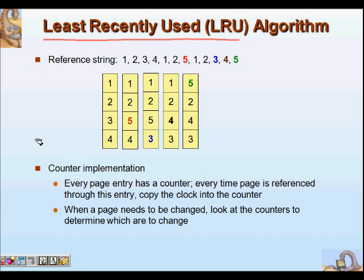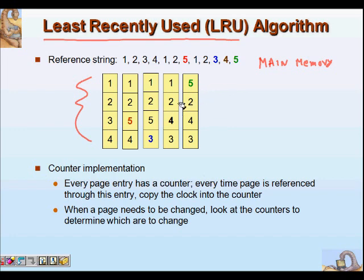Let's try to see with an example that will make it clear. This is our main memory, and let's say it has space for four frames. When references are made, this is the memory access pattern — basically what we access. First we have four frames: page one is accessed and brought into memory, then page two, then page three, then page four.